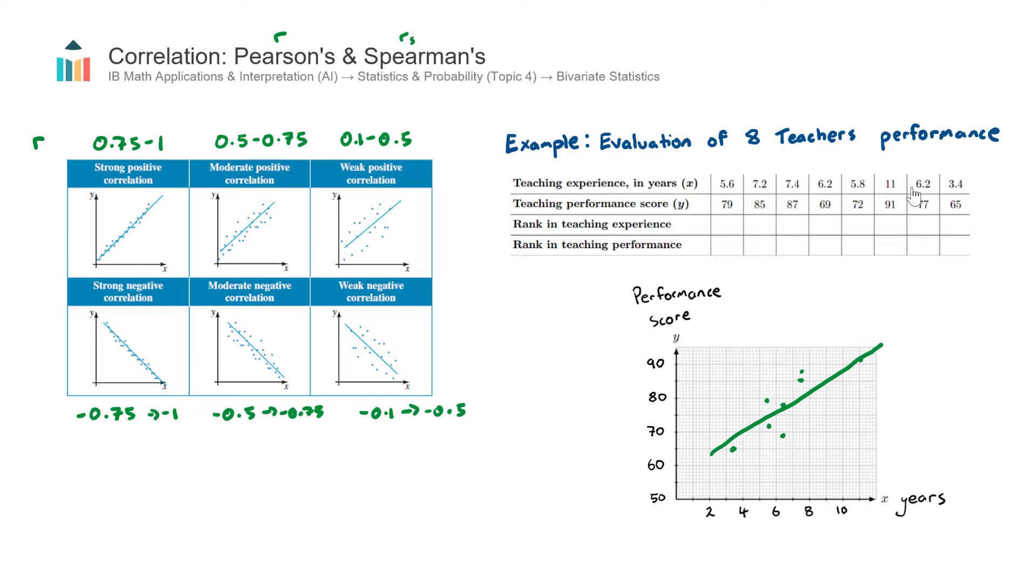Now, what do I mean by ranks? It means that, and this is what I have these two empty rows here for, I'm actually going to rank my teachers, in this case, in order from 1 to 8. Where you can actually choose whether it's ascending or descending. I'm going to go with descending, which means the highest number of teaching years will receive a rank of 1. So that's this one here. All the way down to the lowest, which is this last teacher here. This last teacher will have an 8. And likewise for the teacher performance score, the highest performance score will get a 1, this one here. All the way down to the lowest teacher performance score, which in this case here is also this 8th teacher. So I'm just going to pause the video now and enter the remaining values.